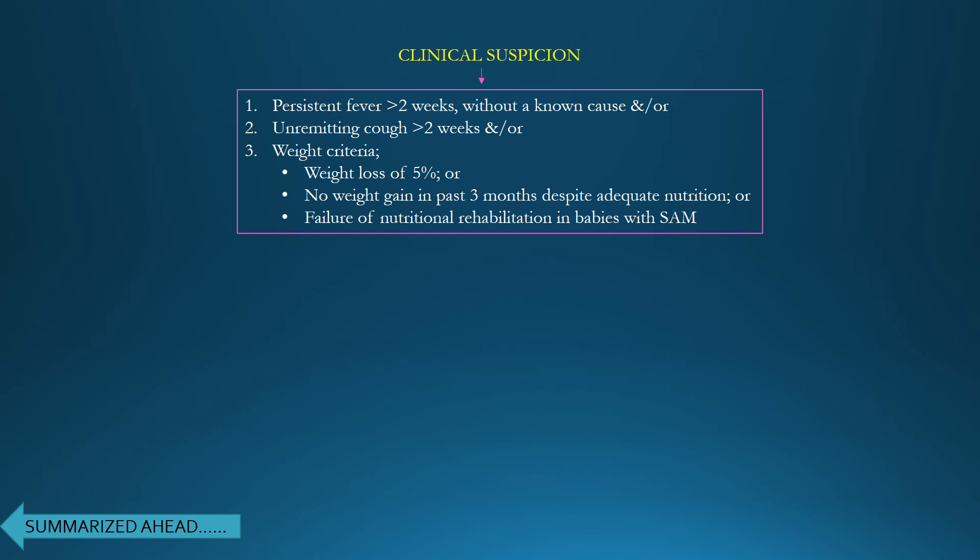The first step in approach is clinical suspicion. Suspect TB if the patient has persistent fever for more than two weeks without a known cause, and/or persistent cough for more than two weeks, and/or a positive weight criteria — either weight loss of 5%, no weight gain in past three months despite adequate nutrition, or failure of nutritional rehabilitation in babies with severe acute malnutrition.